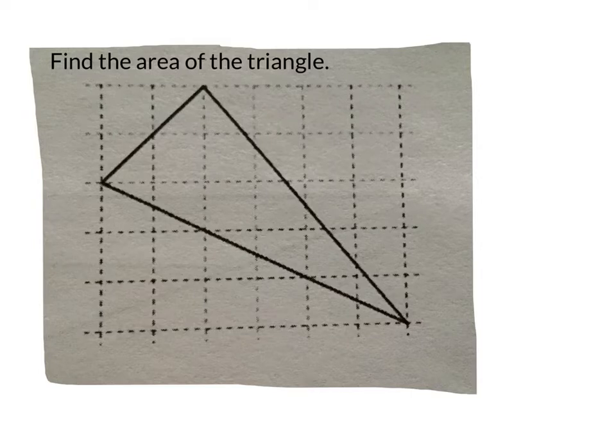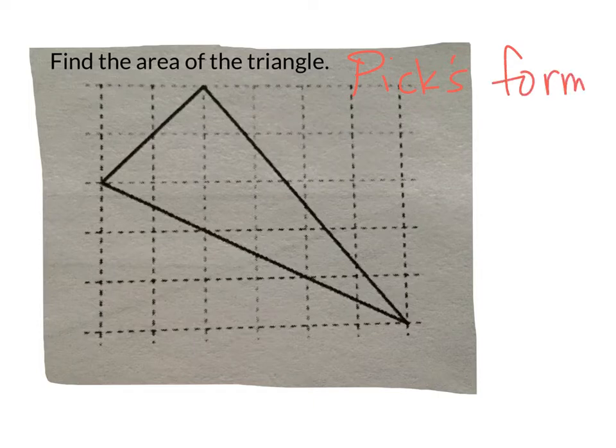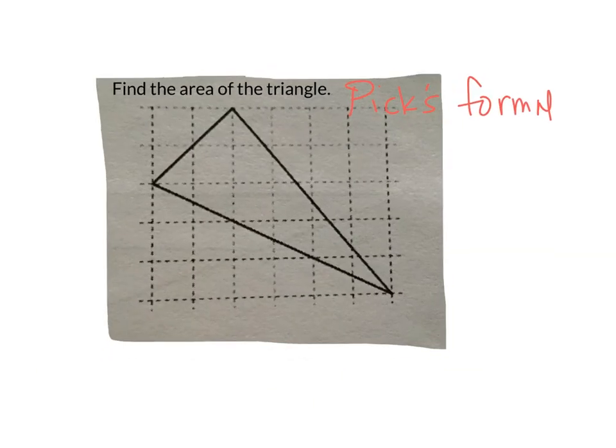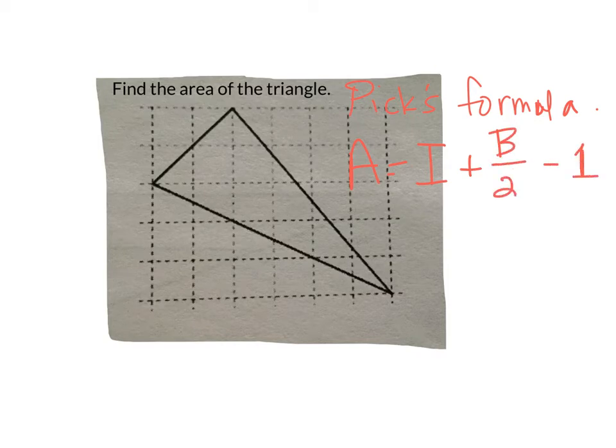And there's a wonderful triangle formula that we can use, known as Pick's formula, which talks about different points on your triangle. Pick's formula says the area is equal to the amount of interior points plus the border points divided by 2, and then take those two numbers and subtract one from them.